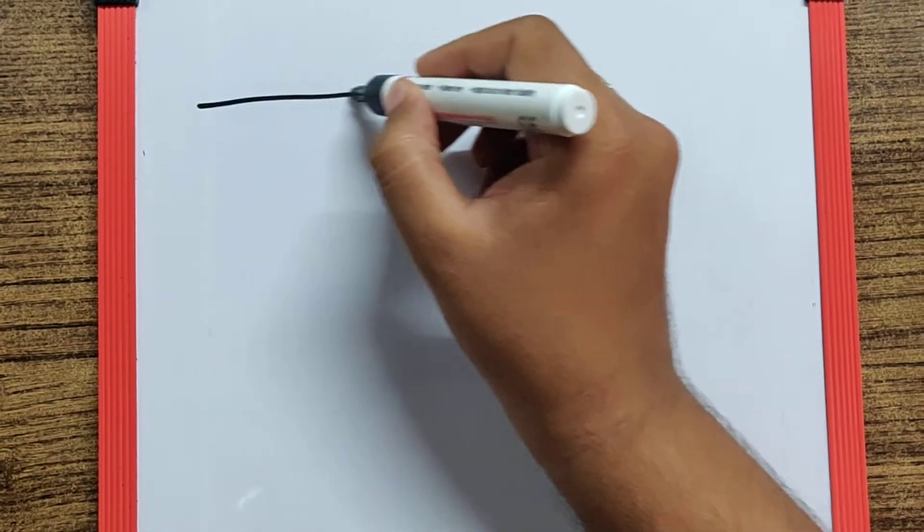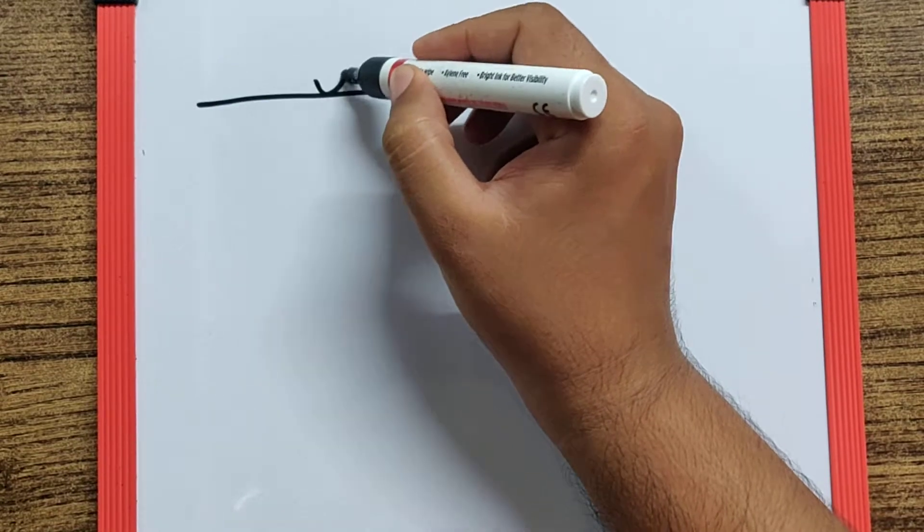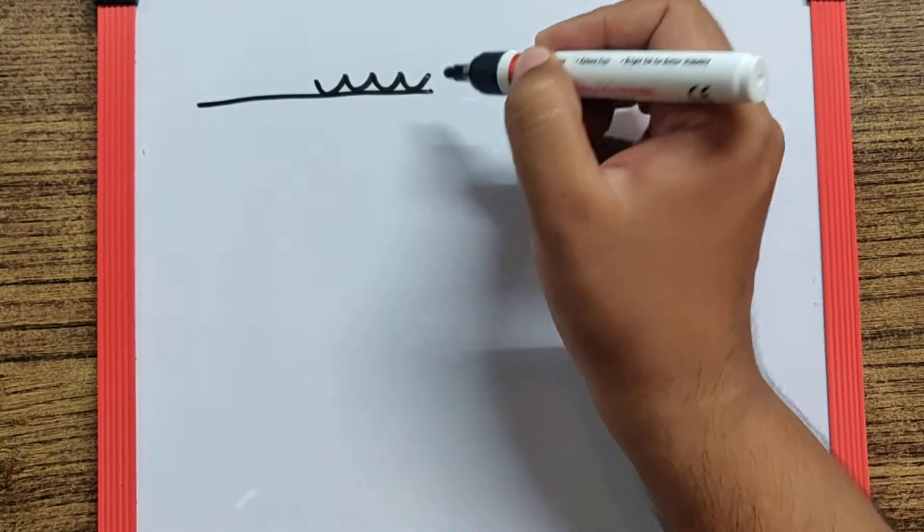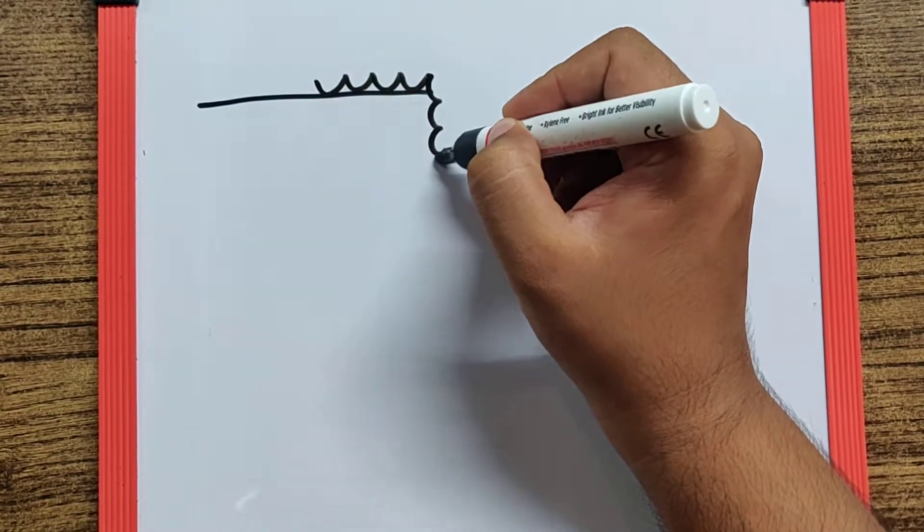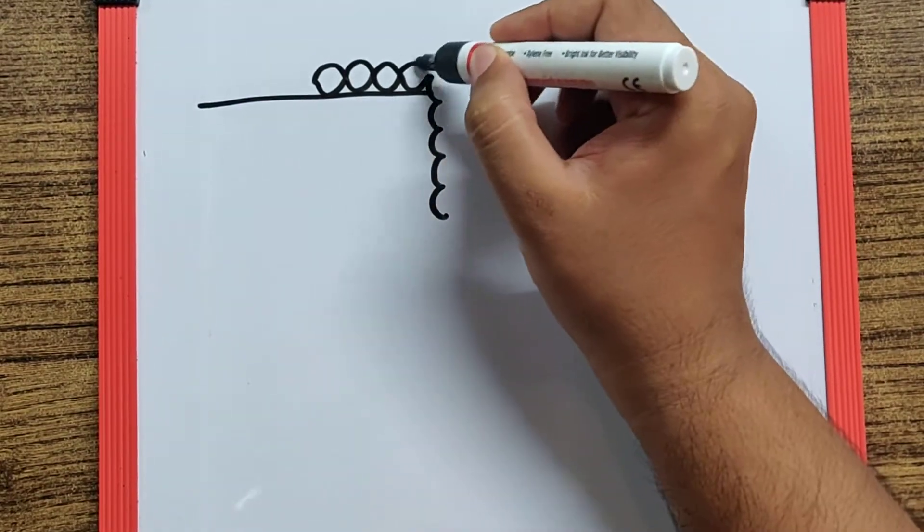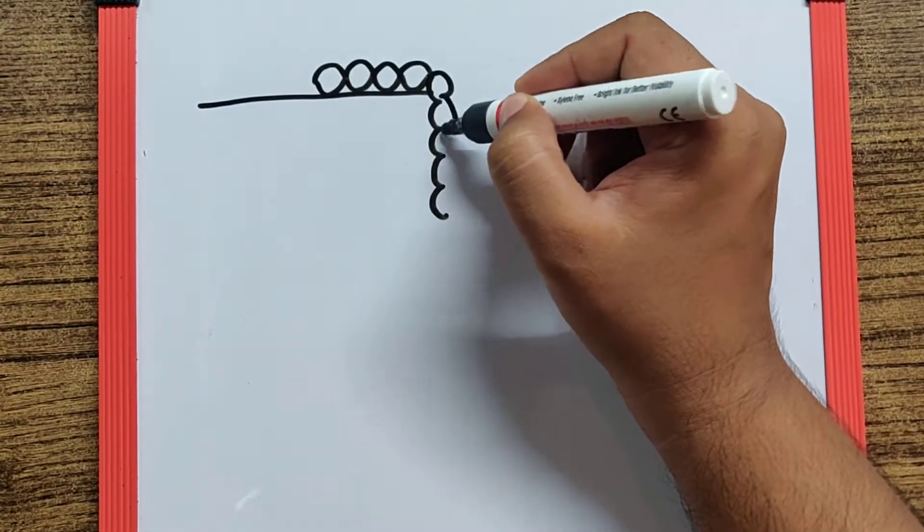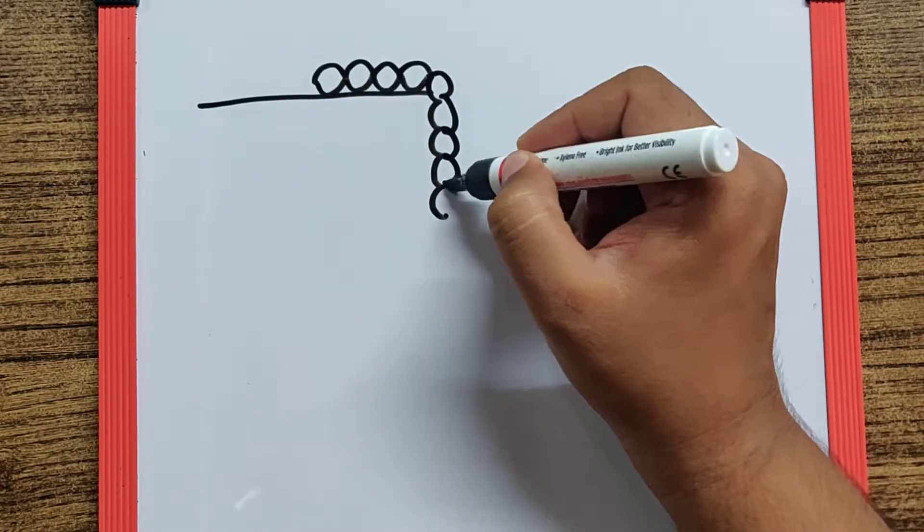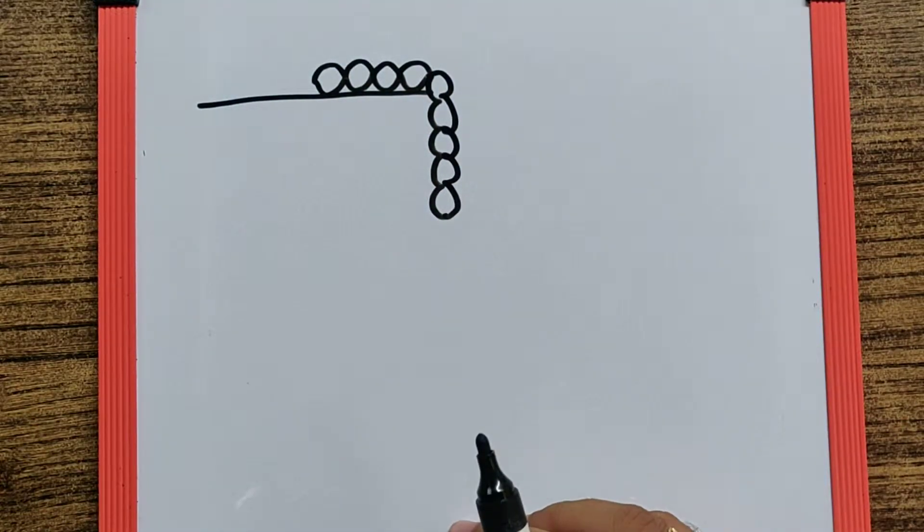Here please try and understand that if you have a table on which a chain is placed in such a way that some part of the chain is on the table and some part is hanging below.